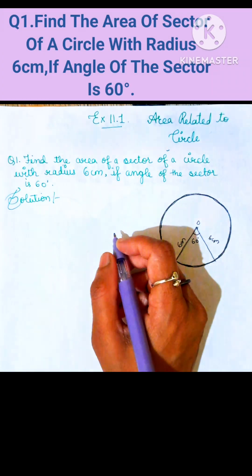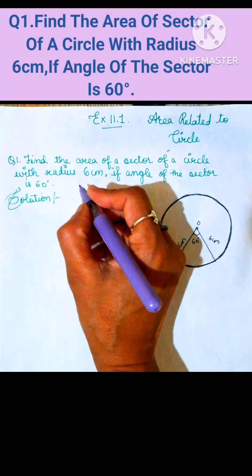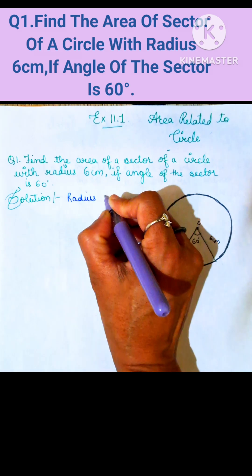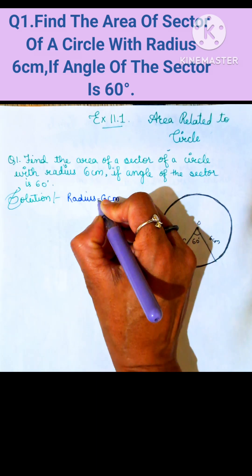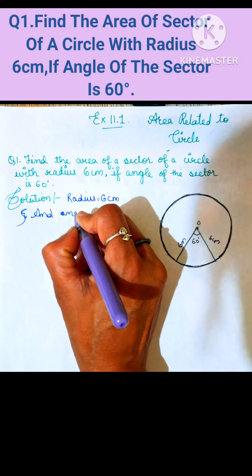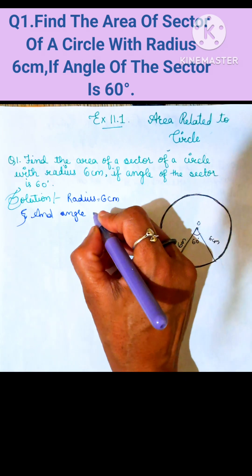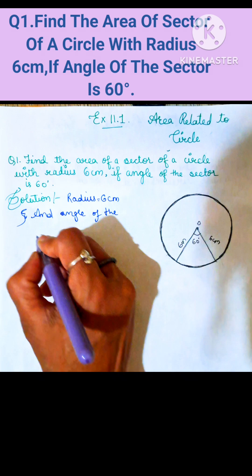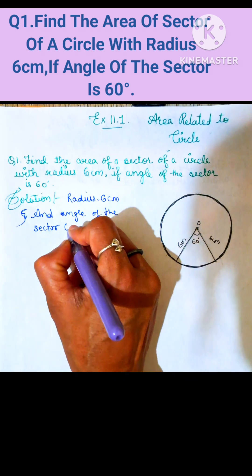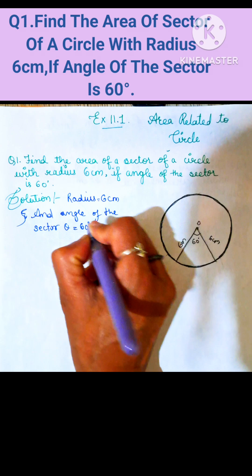In this question, the radius is given as 6 cm. And the angle of the sector theta is equal to 60 degrees.